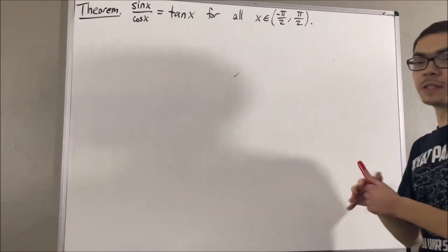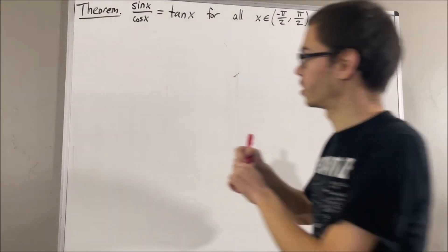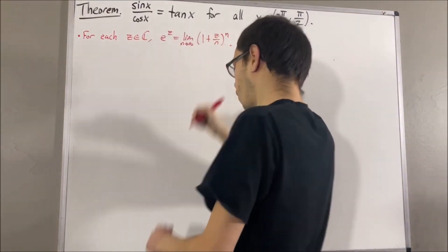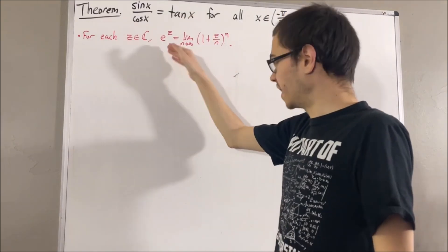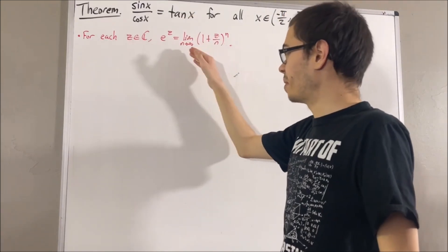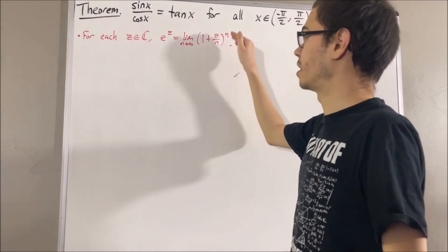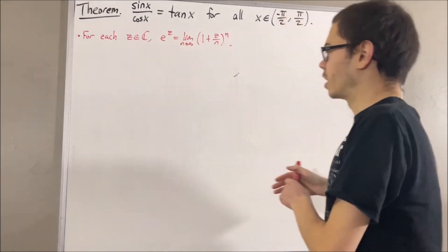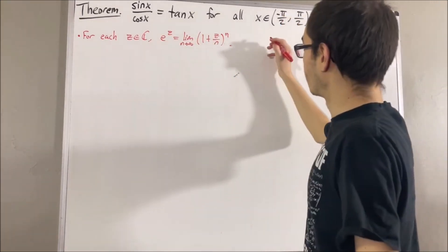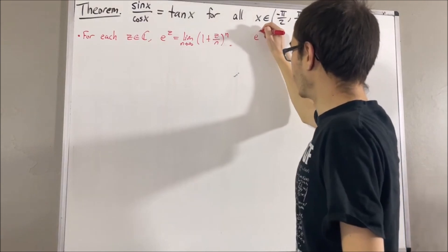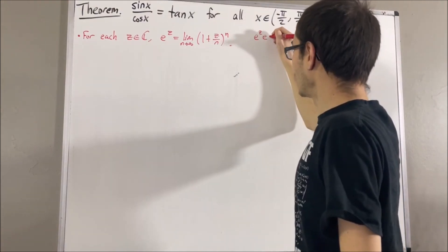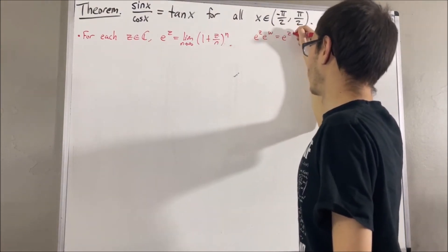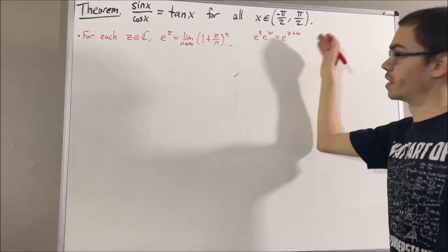Our definition of the exponential function is as follows. For each complex number z, e to the z is the limit of the sequence 1 plus z over n to the power of n. And from here, we've proven a lot of properties of the exponential function. For example, we have proven e to the z times e to the w is equal to e to the z plus w, for all complex numbers z and w.